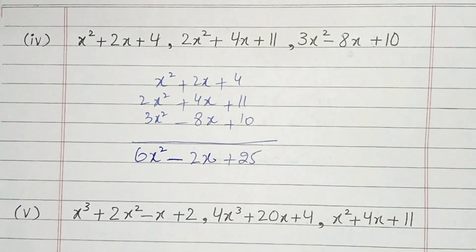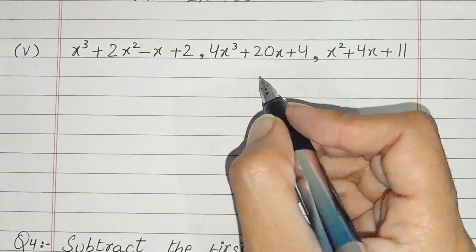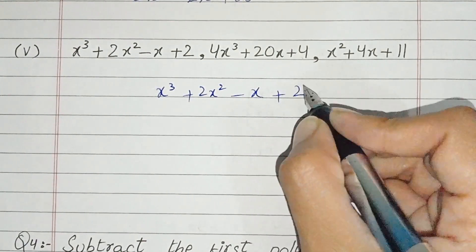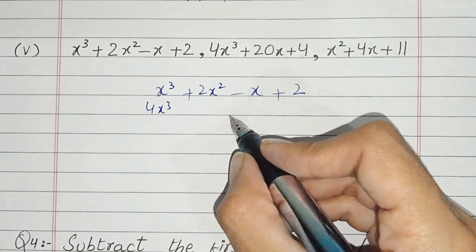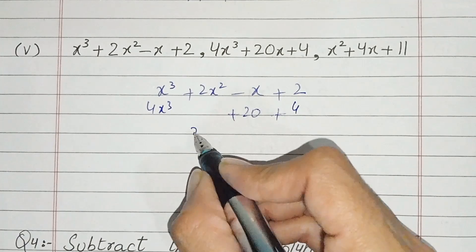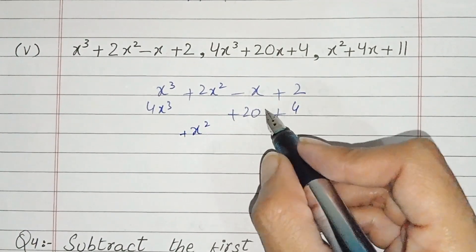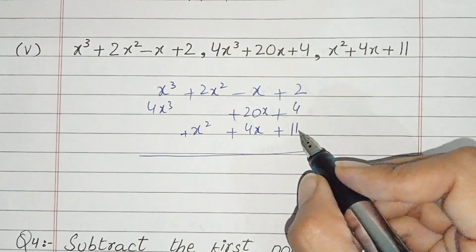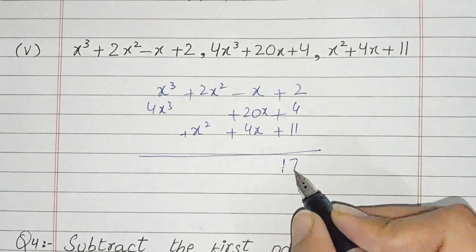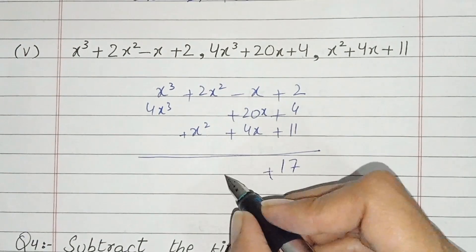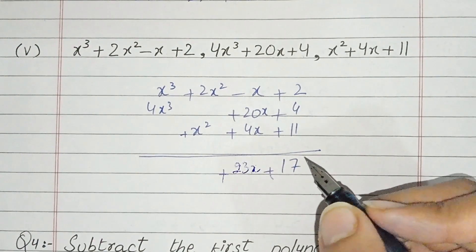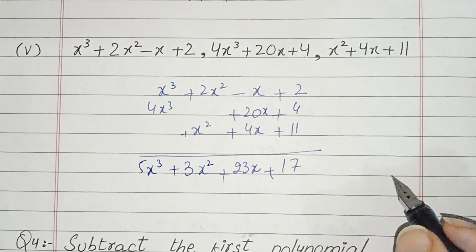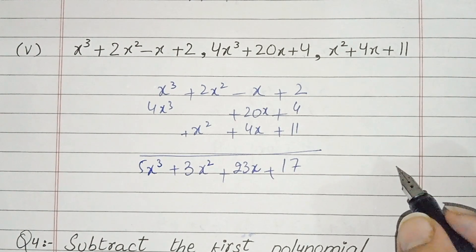6x square, this is the answer of fourth part. Now since fifth part, we have 3 terms and x cube also. x cube plus 2x square minus x plus 2. We add: 2 plus 4 is 6, minus 1 plus 3 is 2, so we get 3x. 2x square plus 4x square is 6x square. 1 plus 3 is 4, so 4x cube. This is the answer of part number 5. Now question number 3 is done.